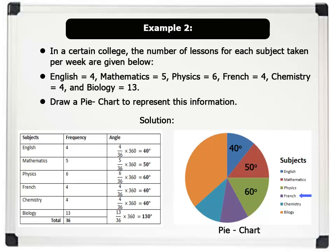French equals 40 degrees. Chemistry equals 40 degrees. And Biology equals 130 degrees. That's brilliant.